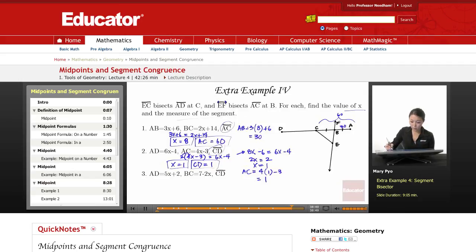The last one. AD, the whole thing, is 5x plus 2, and BC is 7 minus 2x. Find CD. Now this one's a little bit harder because they give you AD, the whole thing, and they give you BC. Now remember if C is the midpoint of AD, that means this whole thing and this whole thing is the same. So let's go back, let's look at this number right here. So if this is 60, then this will also be 60. That means the whole thing together is going to be 120. Then this right here is 30. This right here is 30.